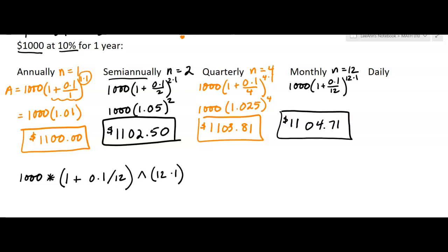And then finally we're going to do daily. So daily is going to be 1,000 times one plus 0.1 divided by 365, to the power of 365 times 1. We're going to do the same calculation that we just put in the calculator, but we're going to change out that 12 for a 365. I didn't do the parenthesis part because I know what 365 times 1 is. It's just 365.